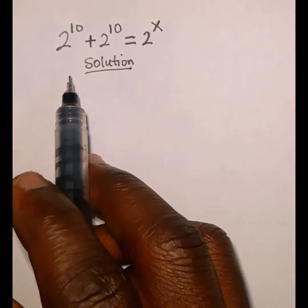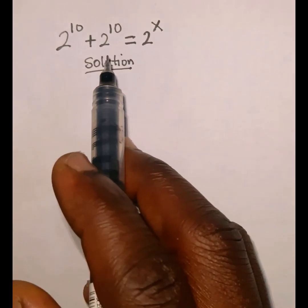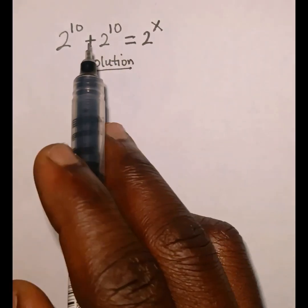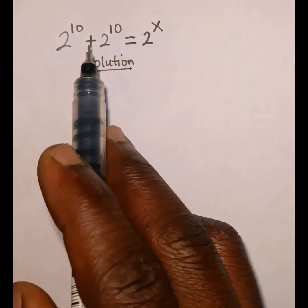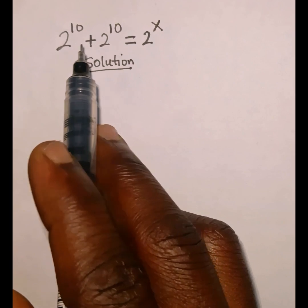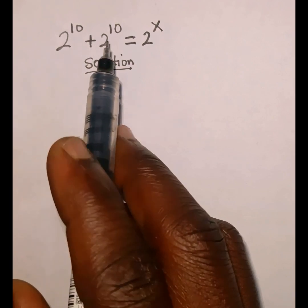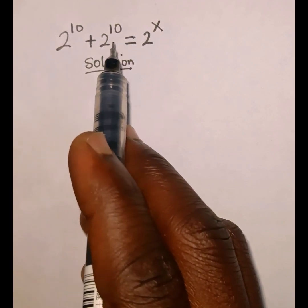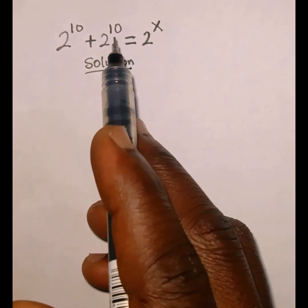Welcome back again. In today's tutorial we're going to learn how to solve for the value of x from this exponential equation. We are given that 2 to the power 10 plus 2 to the power 10 is equal to 2 to the power of x.